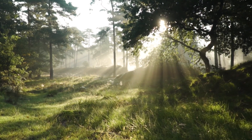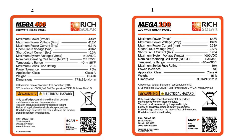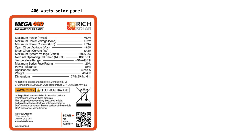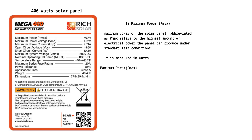Now that we have understood the standard test condition, let us look into each of the technical specifications of a solar panel and the role they play in the solar panel's power generation. 1. Maximum power. Maximum power, abbreviated as Pmax, refers to the highest amount of electrical power the panel can produce under standard test conditions. It is derived from the maximum power voltage (VMP) and maximum power current (IMP). Multiplying VMP by IMP gives you the maximum power of the solar panel in watts.